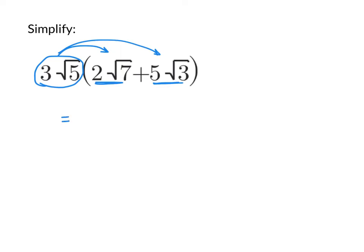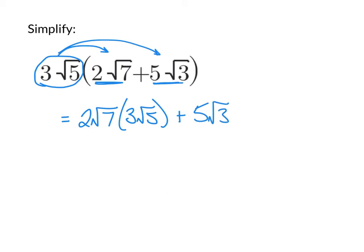As we write this out, we take 2√7 and multiply it by 3√5, and we take 5√3 and multiply that by 3√5. When multiplying radicals together, numbers outside the radicals get multiplied with each other, and numbers inside the radicals get multiplied with each other.